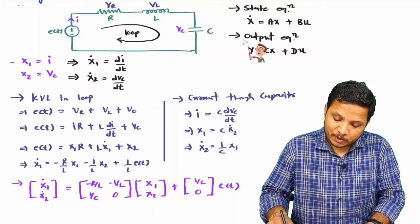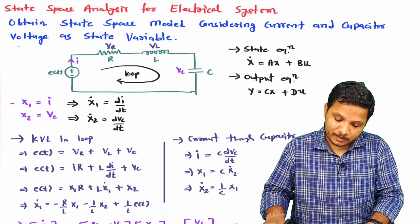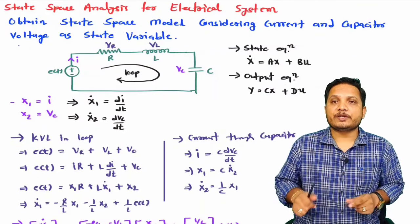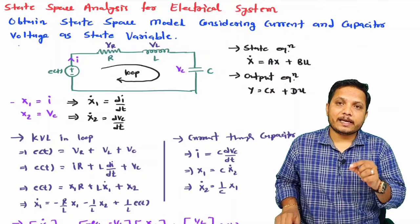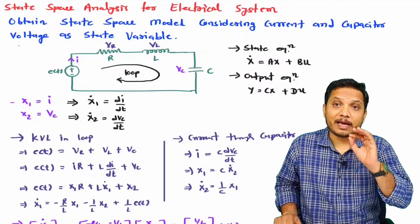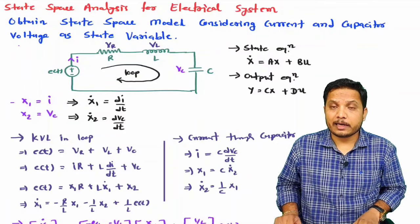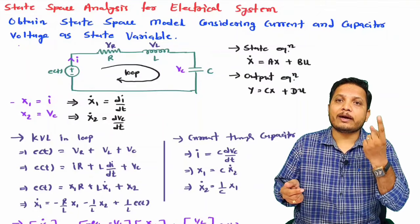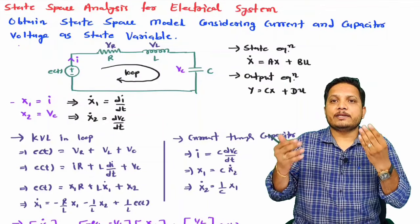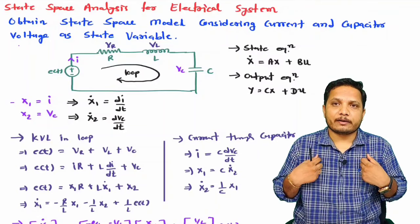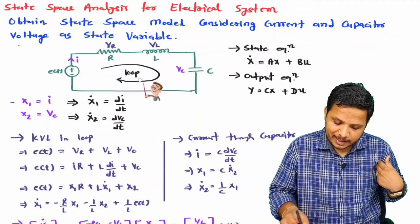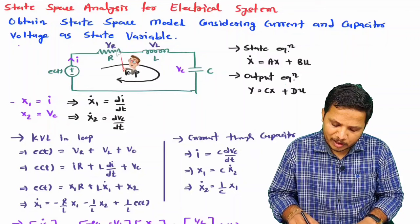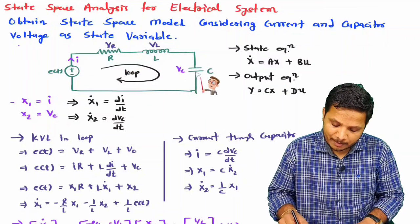Now we need to identify the output equation. One important thing to keep in mind: in the output matrix there can be any number of outputs — one, two, or three. It is your choice how many outputs you want to take. Here we will consider output across the resistance and output across the capacitance.